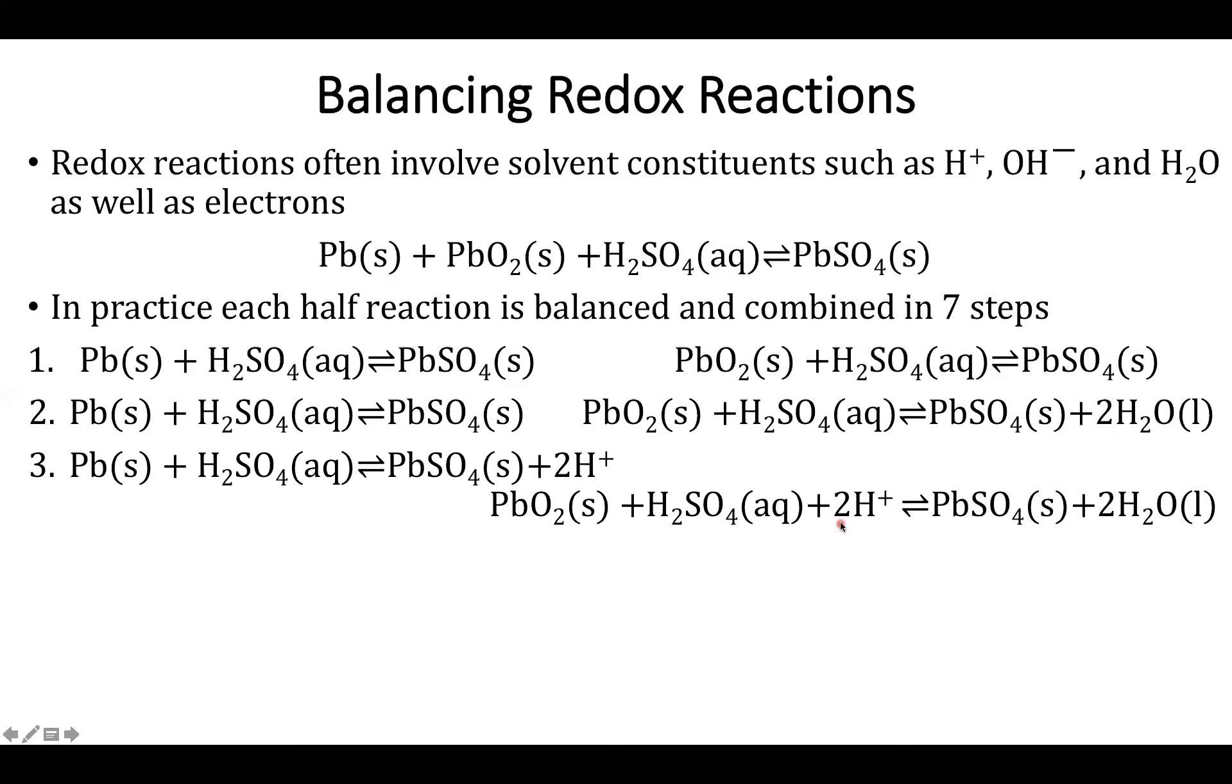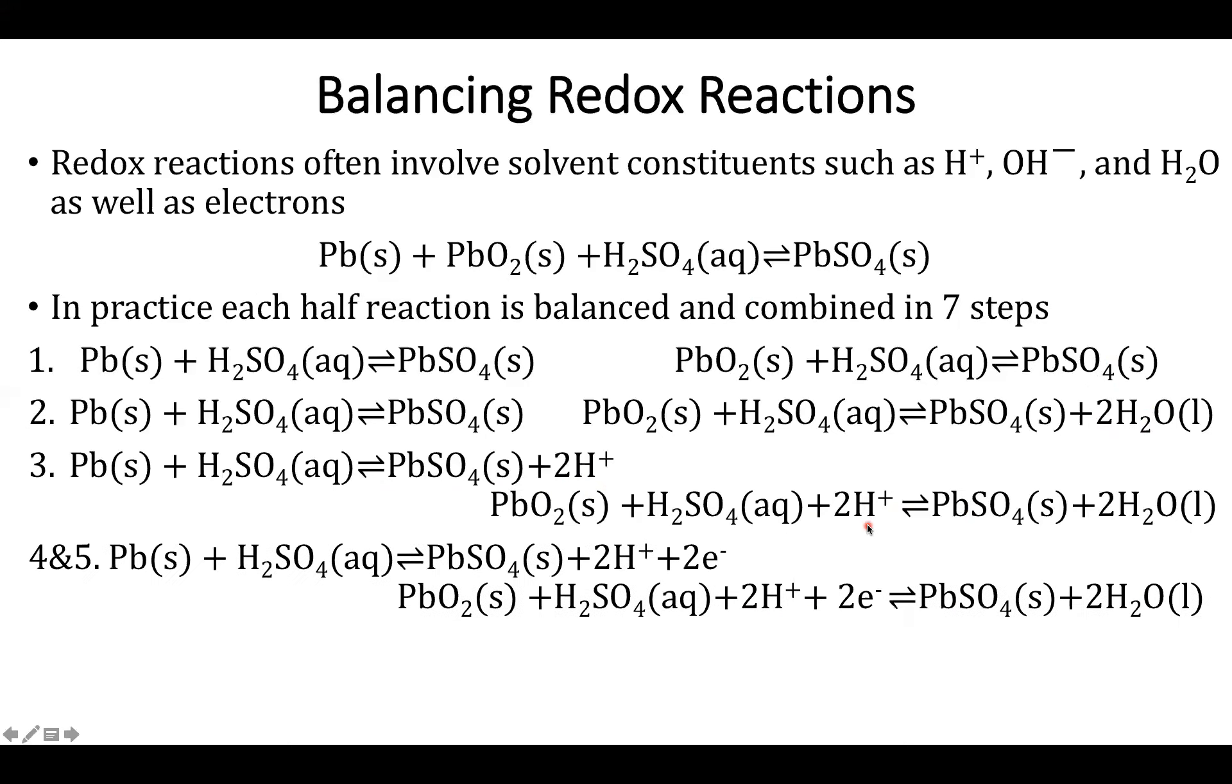But wait there's more. We need to balance the charges. For my oxidation reaction I've got a plus two charge on the right side and zero on the left. So I need to add negative charge to the right side to make it neutral. So I'll add two electrons to the right. And then similar for the reduction reactions I need to add two electrons to the left.